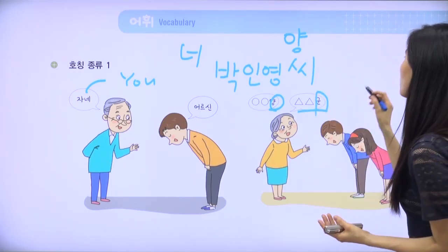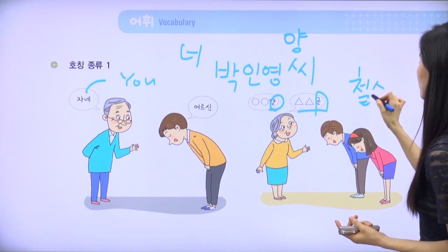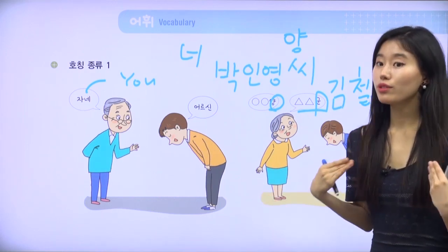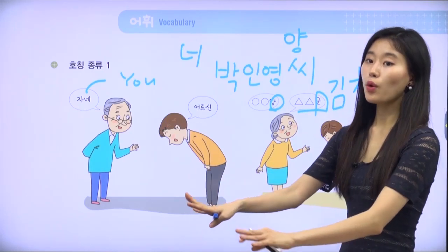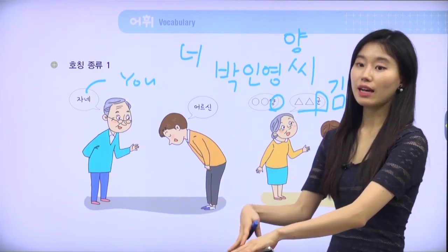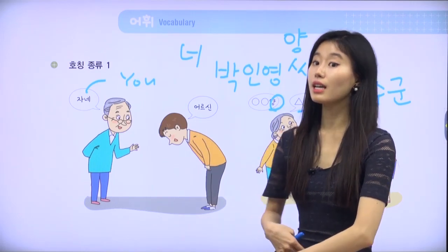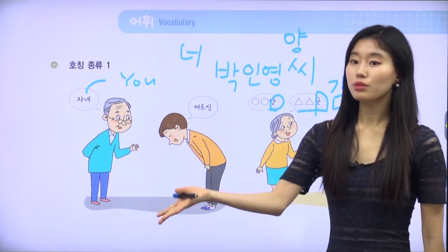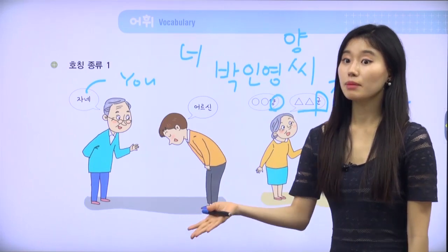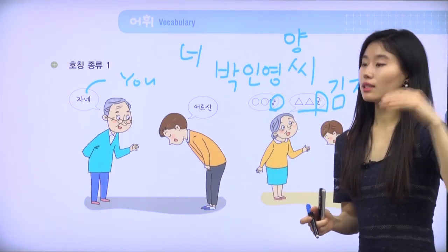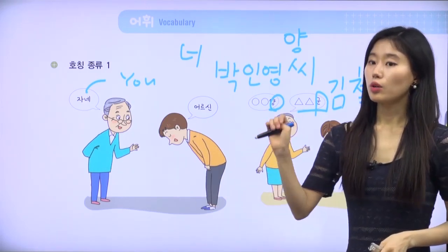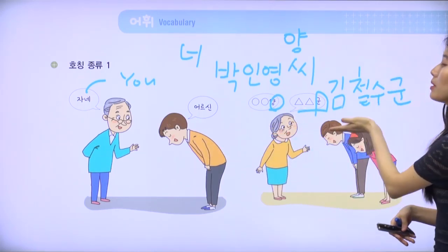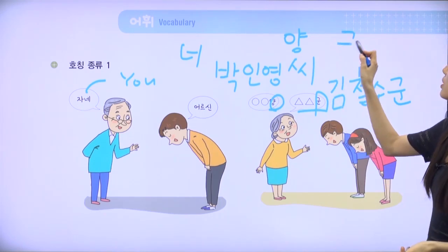군 is for male — for example, 철수 군 or 김철수 군. However, I would not say 소연 양 or 철수 군 to people younger than me, because I'm not 할머니 or 할아버지 yet. I would say 소연 씨 or 철수 씨. But because elders are the oldest, they would say Inyoung 양, 소연 양, 철수 군 — so 양 is for female and 군 is for male.